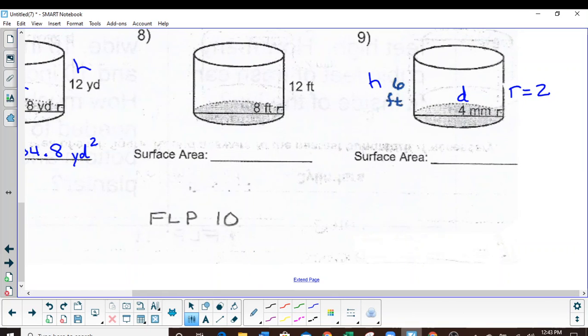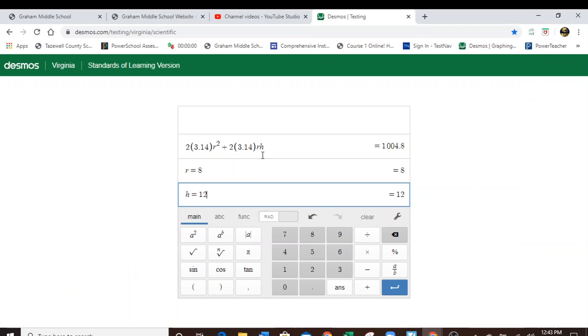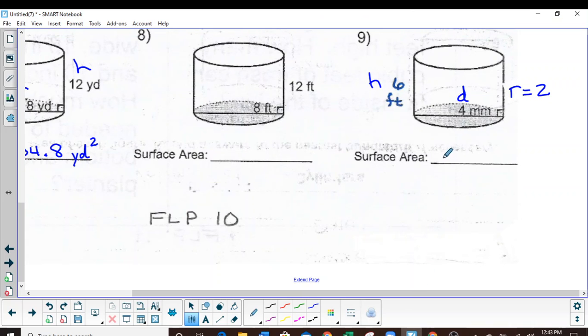Radius of two, height of six. 100.48. And that will be feet squared, or square feet.